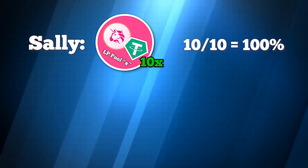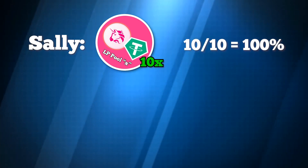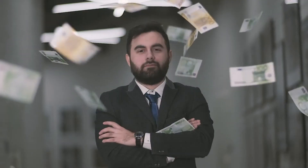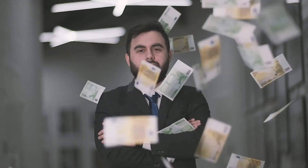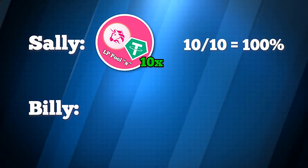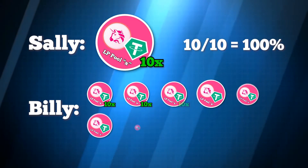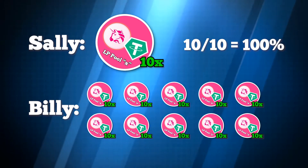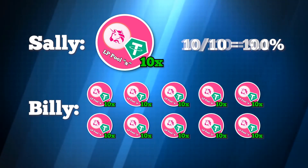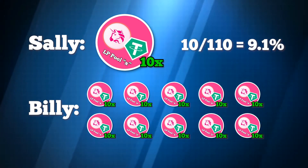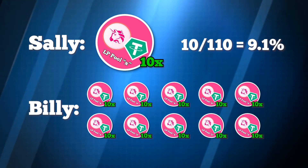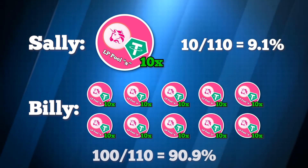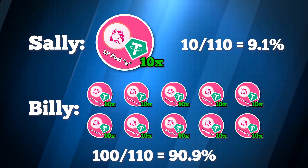She owns all of them, so she gets 100% of the fees and owns 100% of the liquidity. Billy Bigshot rolls in and pours in 10 times her amount of liquidity into the pool and gets 100 LP tokens. There are now 110 tokens. Sally has 10 out of 110, or 9.1% ownership. Billy has 100 out of 110, or 90.9% ownership.